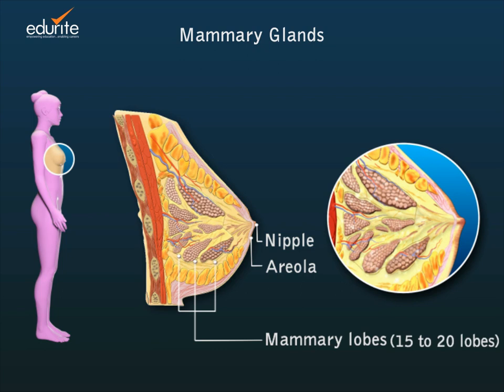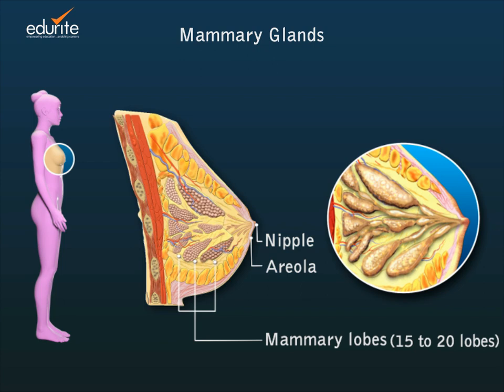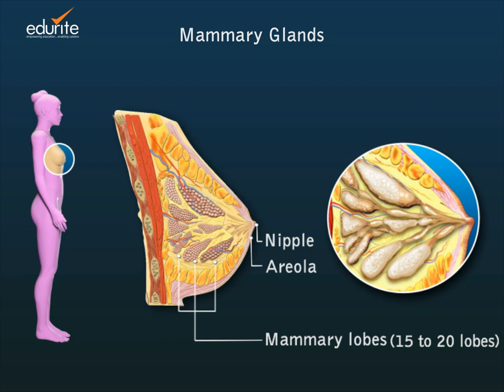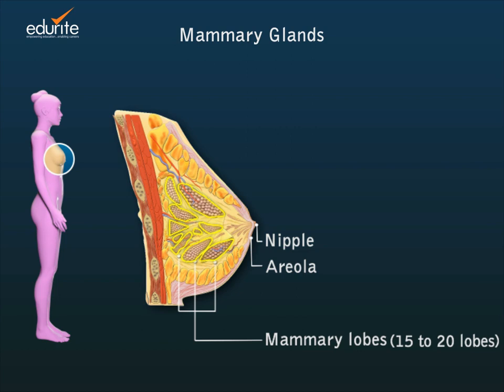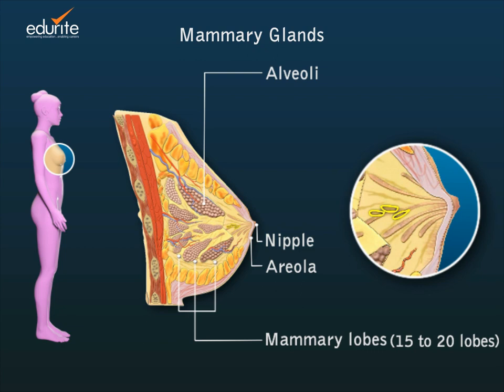When a baby suckles, milk is secreted and passes through various cavities and ducts within each mammary gland. Milk is secreted and stored in the clusters of alveoli within each mammary lobe.